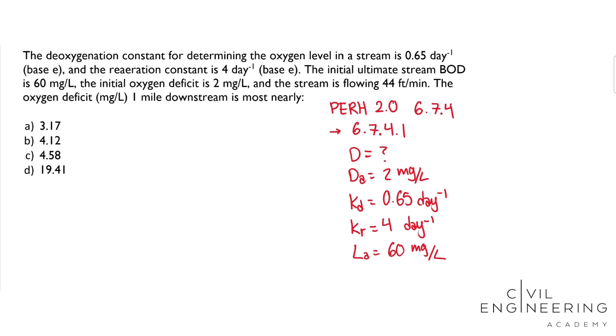We need T time. We were given a flow rate and a distance. So from that, we can calculate the time. Looking at all the variables that we do have that we're given, let's look at the equations and see which ones we need to use.